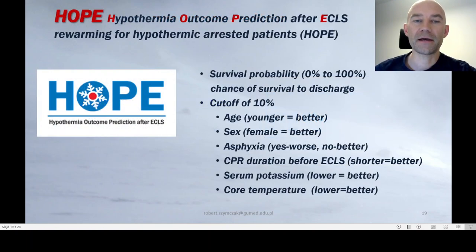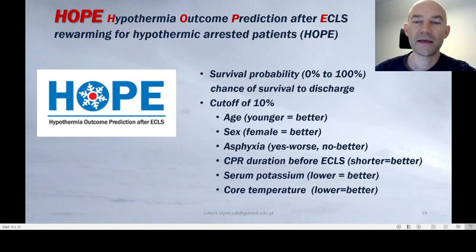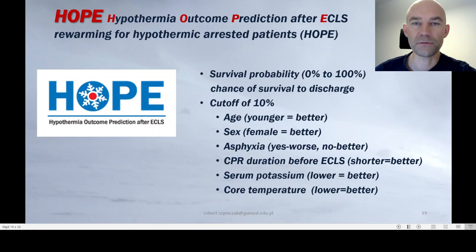It is better to use the HOPE score than traditional in-hospital serum potassium prognostication, which is less reliable. The HOPE score — Hypothermia Outcome Prediction after Extracorporeal life support rewarming for hypothermic arrest patients — gives survival probability from 0 to 100% chance of survival to discharge. The cut-off is 10%: if the HOPE score is below 10%, extracorporeal life support should not be administered and termination of CPR should be considered.